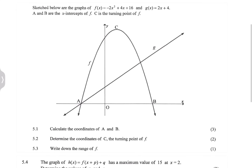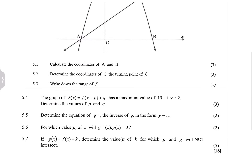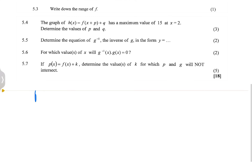So they say sketched below are the graphs of F of X, which is minus two X squared plus four X plus 16, and G of X, which is two X plus four. A and B are the X intercepts and C is the turning point of F. They say calculate the coordinates of A and B, so we are looking at the X intercepts. We know this is going to be F of X equals minus two X squared plus four X plus 16, and at the X intercepts, Y is equal to zero.